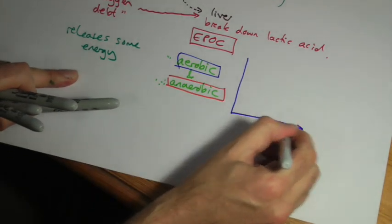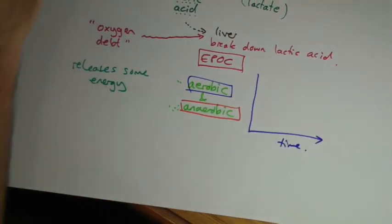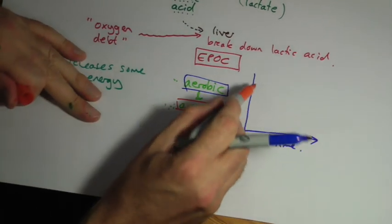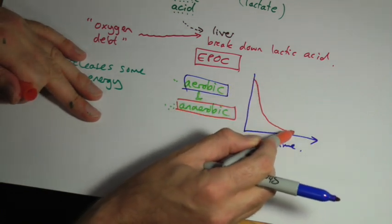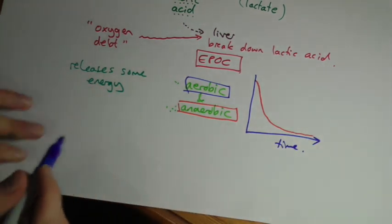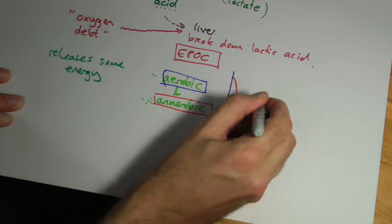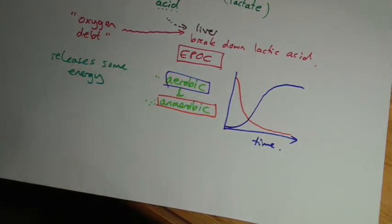So across the bottom you've got the amount of time you're exercising. Basically anaerobic is quite high at the beginning but it starts to run out and get lower and lower as you go along. But it's still there running in the background. So you're still making lactic acid. Whereas the aerobic starts off slowly then picks up. And this one allows you to carry on exercising for much longer.